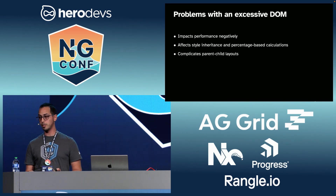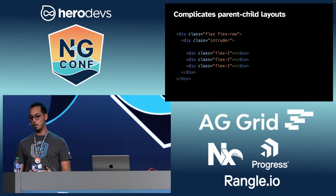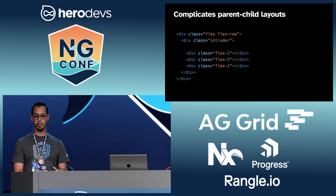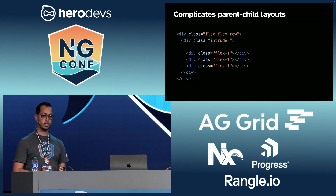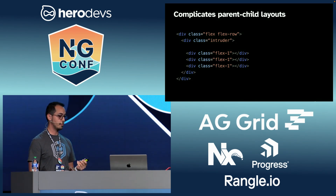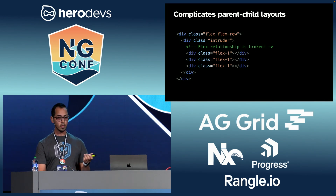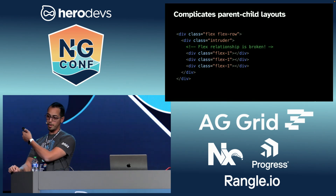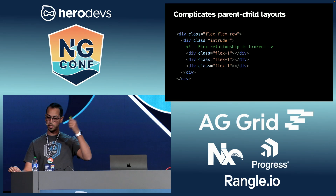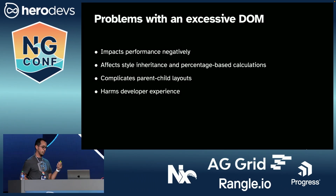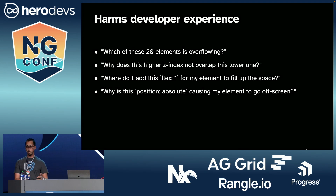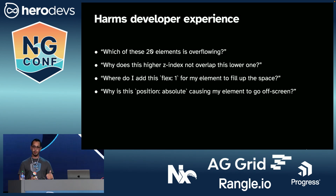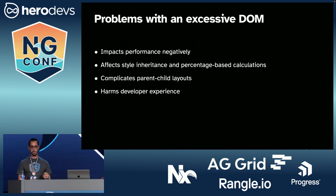It also complicates parent-child layouts. Display types like flex and grid don't only affect the elements you define them on, but they affect their children. So if you create a flex element, all its direct children become flex children. That poses a problem when we introduce DOM elements where they shouldn't be — this intruder div is going to break the flex relationship between the top div and the inner children. Because of these reasons and a myriad of others, it harms developer experience. If you've ever asked yourself how do I know which element is overflowing, or why is this z-index 999 not overlapping the other one — simplifying your DOM is going to make achieving these goals easier.